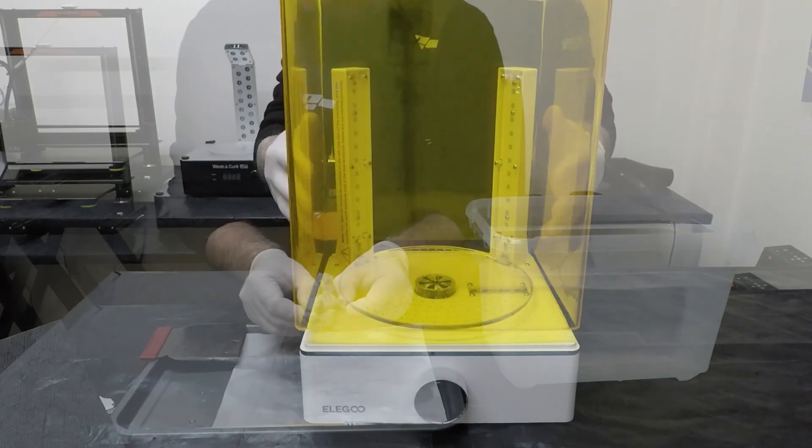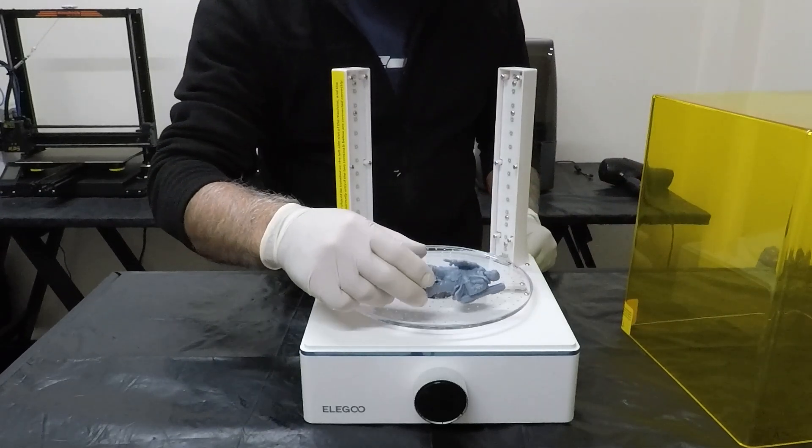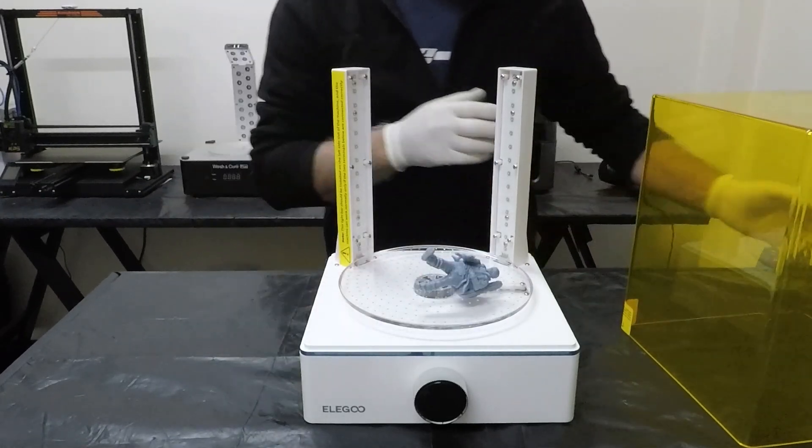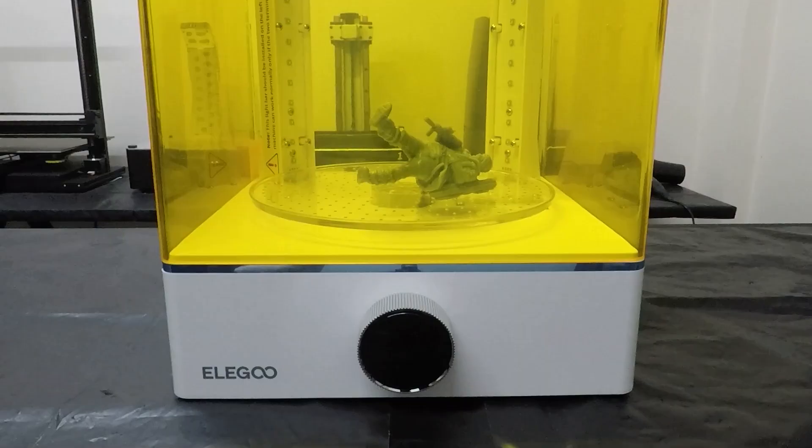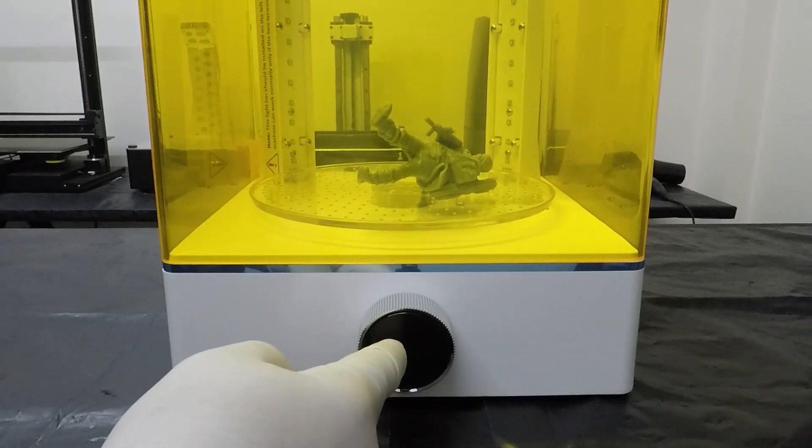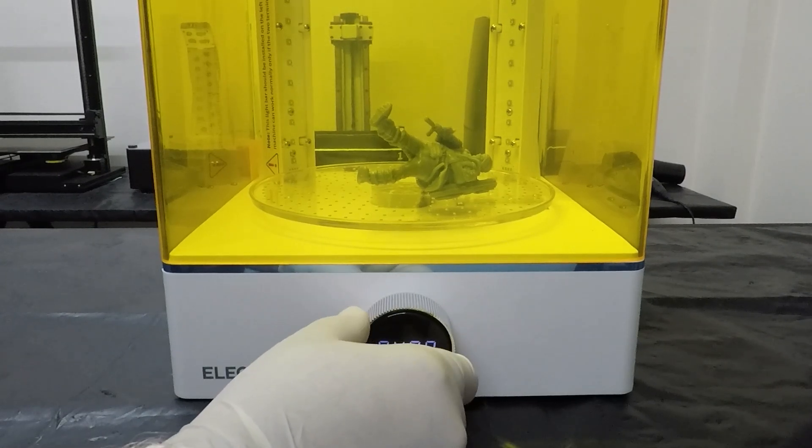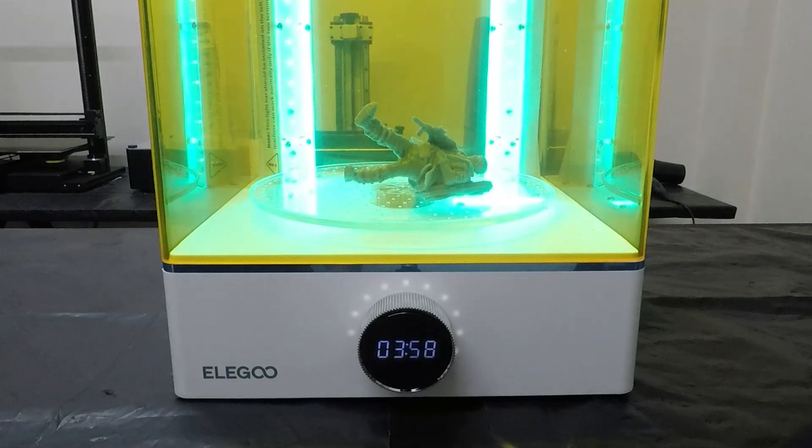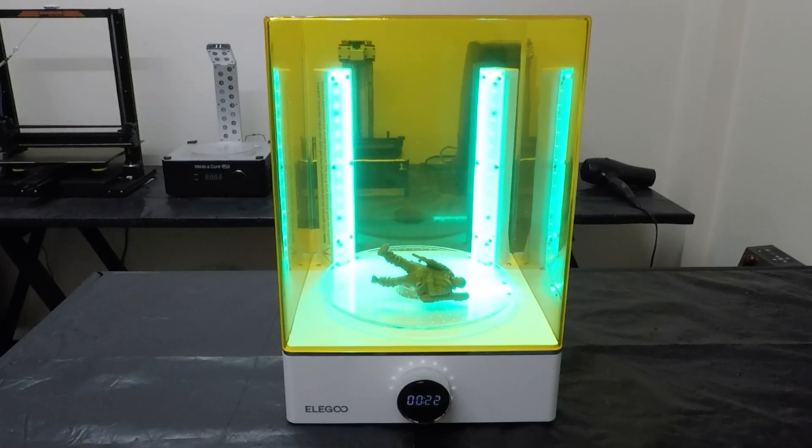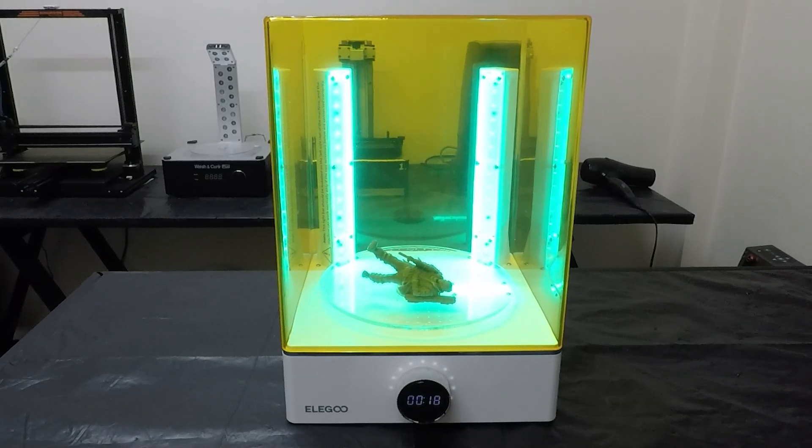The curing machine has a really decent sized plate on it - about 190mm in width. The unit also has a UV bar just underneath the turntable. Just like the washing machine the unit is controlled by this turning knob and I usually cure for about four minutes. One thing surprised me was how slow it actually turns - it takes about a minute and a half to do a full turn.